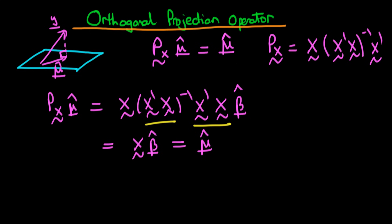Note that you could also just put X in here. If you operate the projection operator on X, you'll just get X out. So it also holds that for any other vector which lies in the column space of X, the projection operator returns that vector.